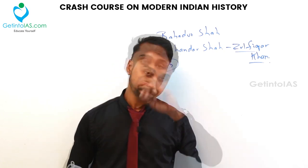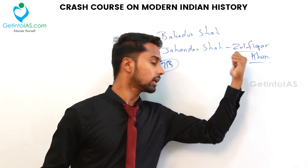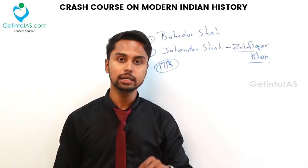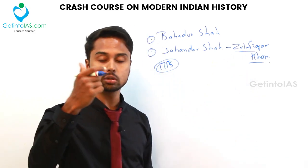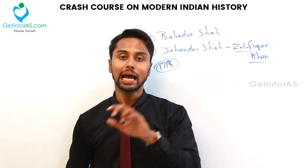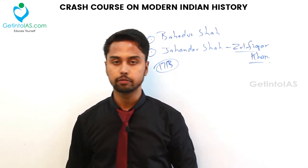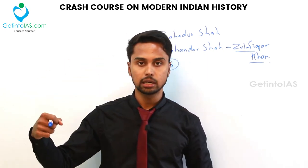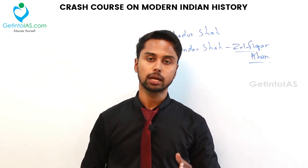Regarding the Marathas, Zulfikar Khan's commander-in-chief, Daud Khan Panni, made a treaty with the Marathas. By that treaty, they were allowed to collect tax, but on one condition: the Marathas could not collect the tax directly from the people — the Mughals would collect the tax and transfer it to the Marathas. With respect to Punjab, Zulfikar Khan maintained the same frustrated relationship with Banda Bahadur, while maintaining good relations with the Bundela and Jat chiefs.